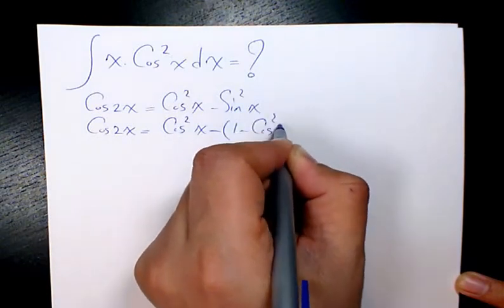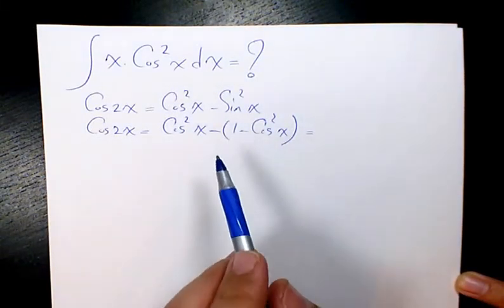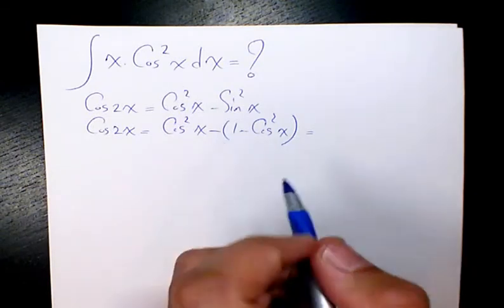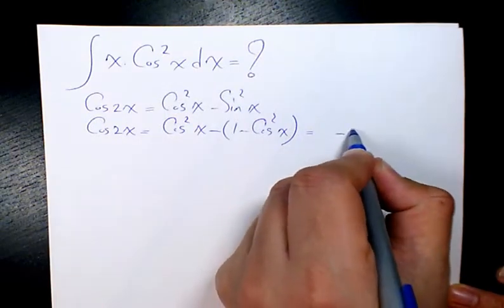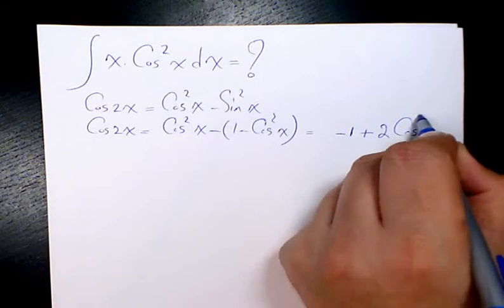So after that, we can say it will be equal to negative 1 plus 2 cosine squared x.